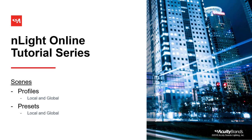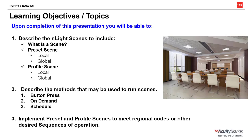Welcome to the nLight online tutorial series. Today we'll discuss what a scene is, the two types of scenes available in the nLight platform — presets and profiles — and the differences between local and global scenes. We'll also discuss the various methods used to run these scenes, and some ways that we can implement these scenes to meet regional codes or other desired sequences of operation.